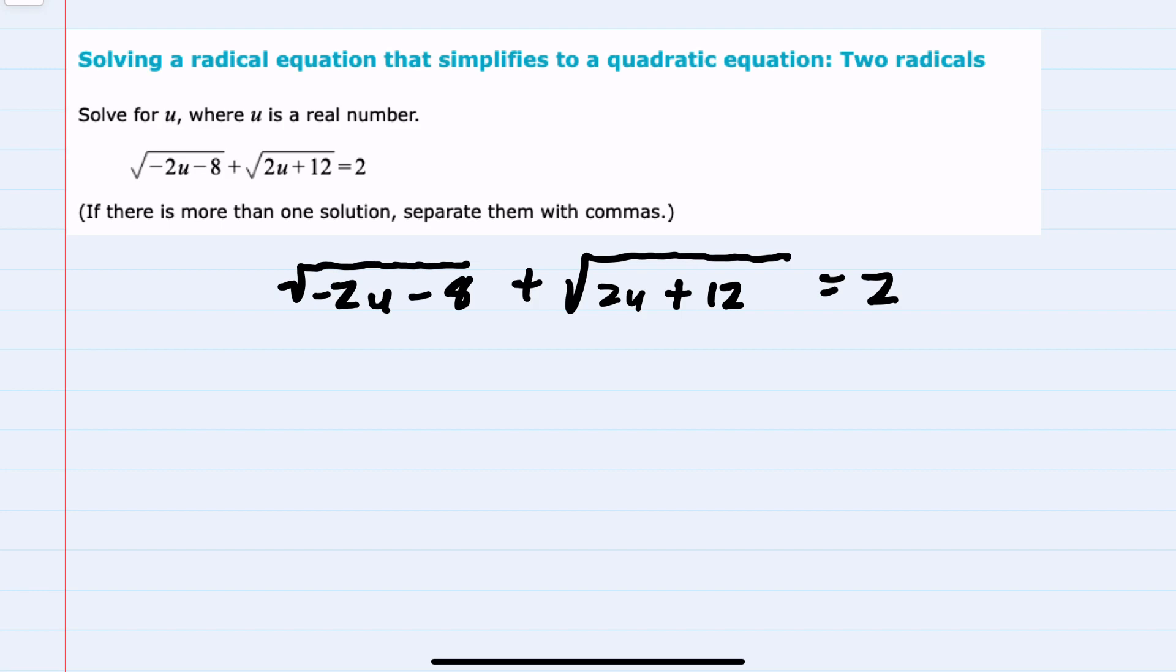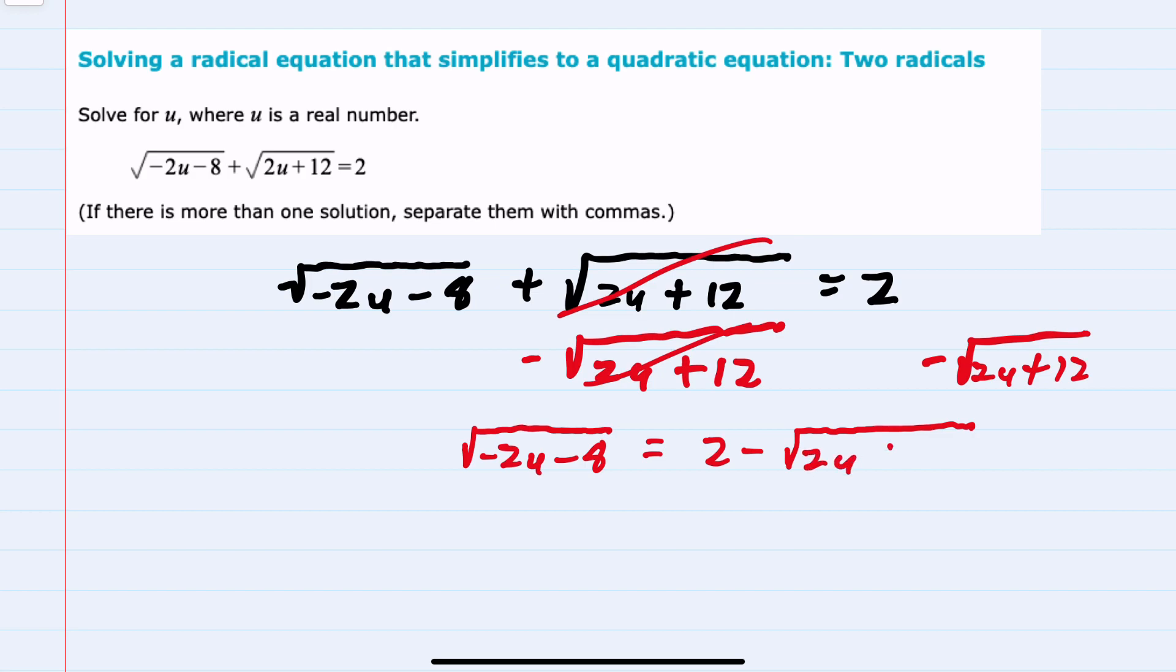To begin solving this and remove the radicals, I first need to isolate one of these two. It doesn't matter which one I move, so I'll move the second one to the other side, giving me just the radical √(-2u-8) on the left hand side, and on the right hand side I have 2 - √(2u+12).